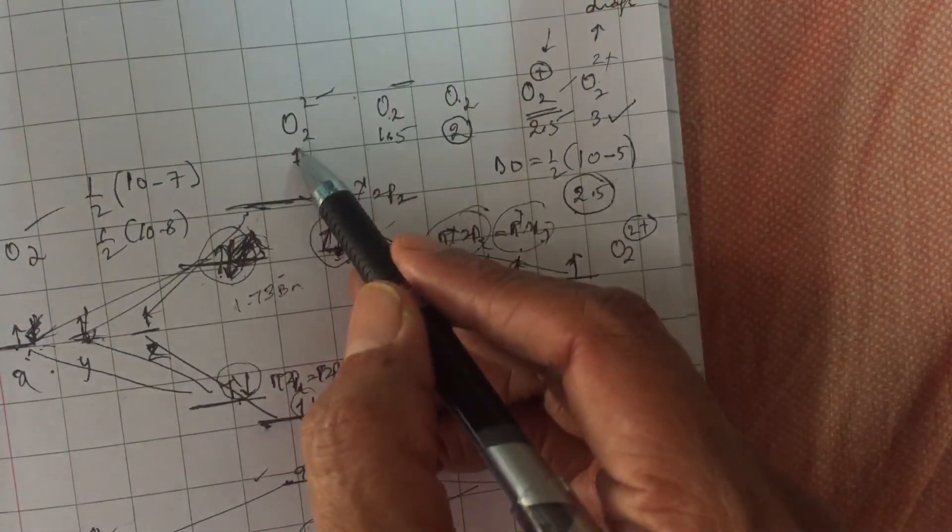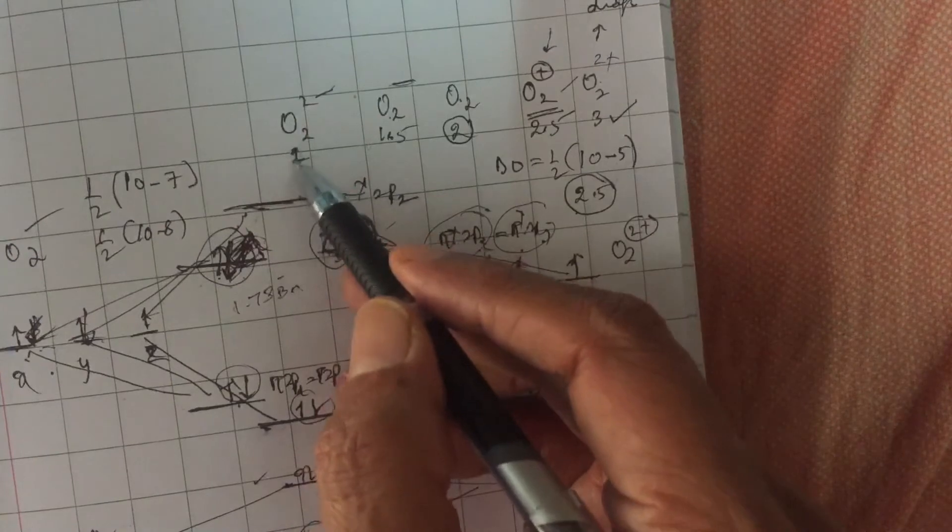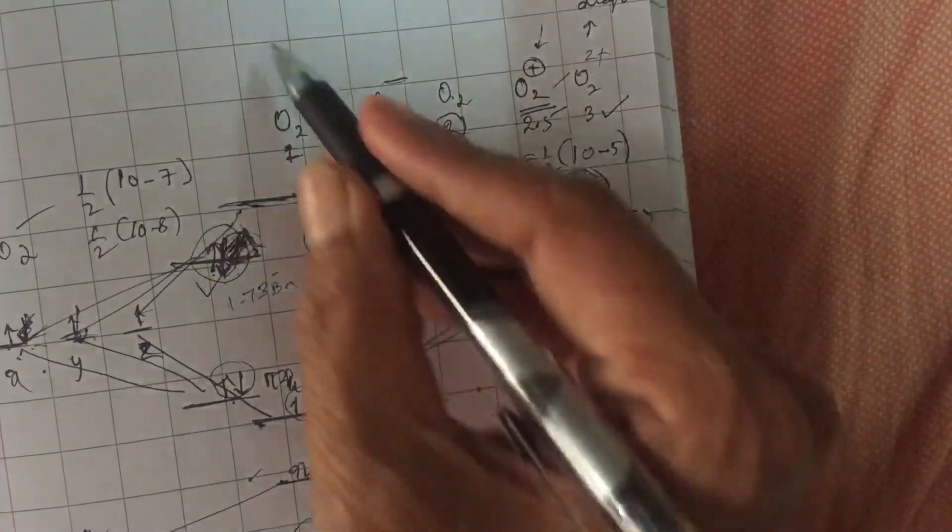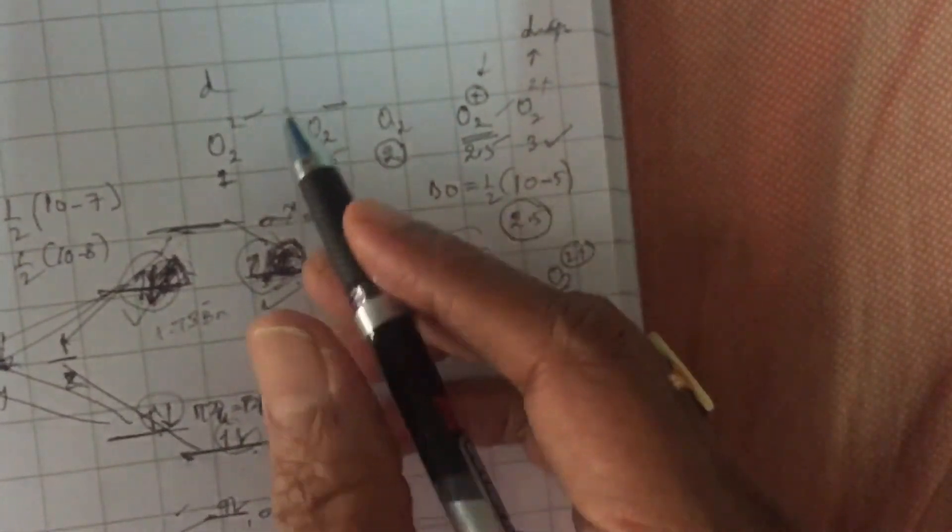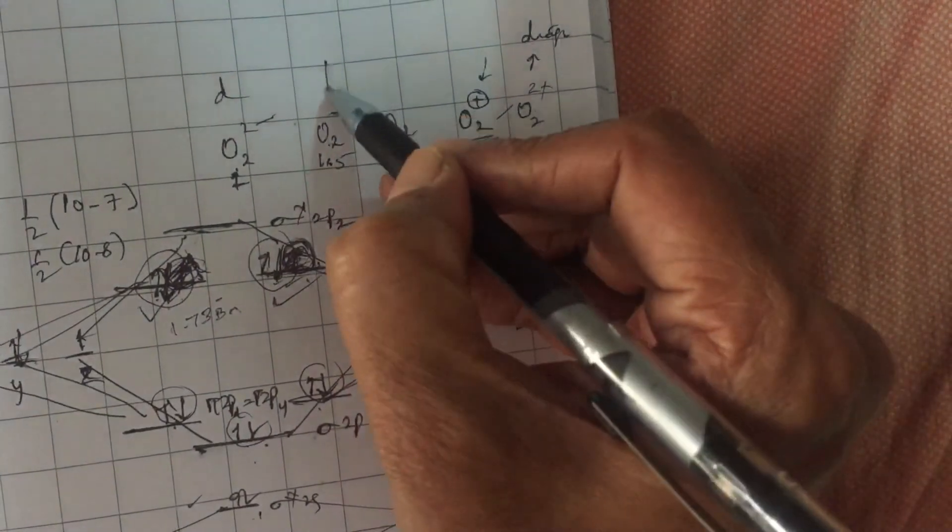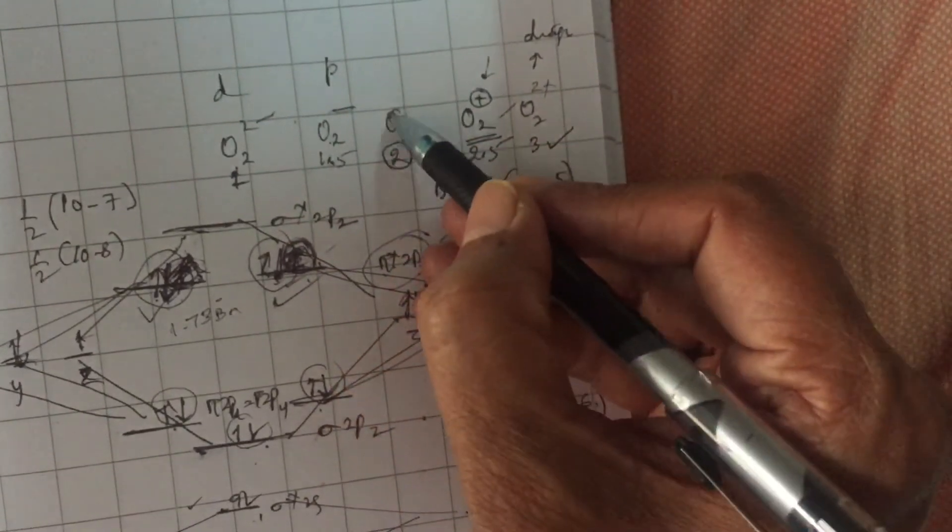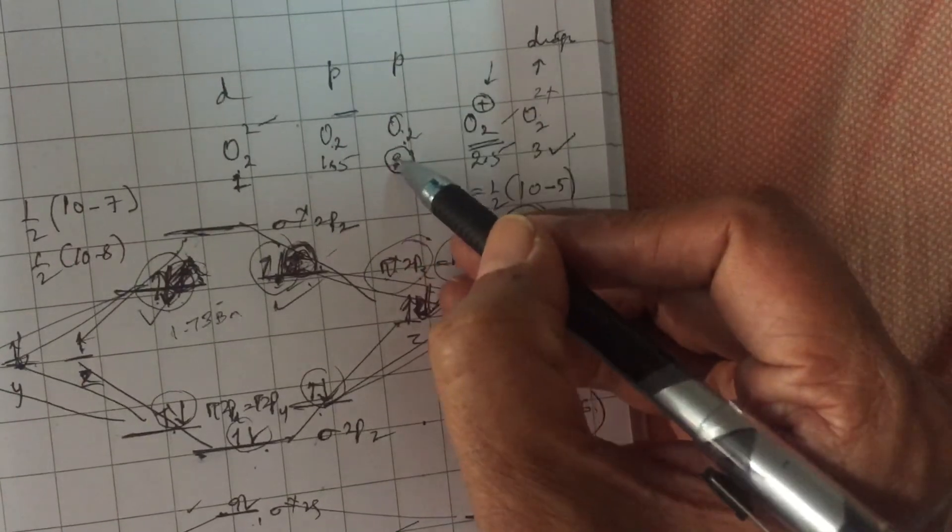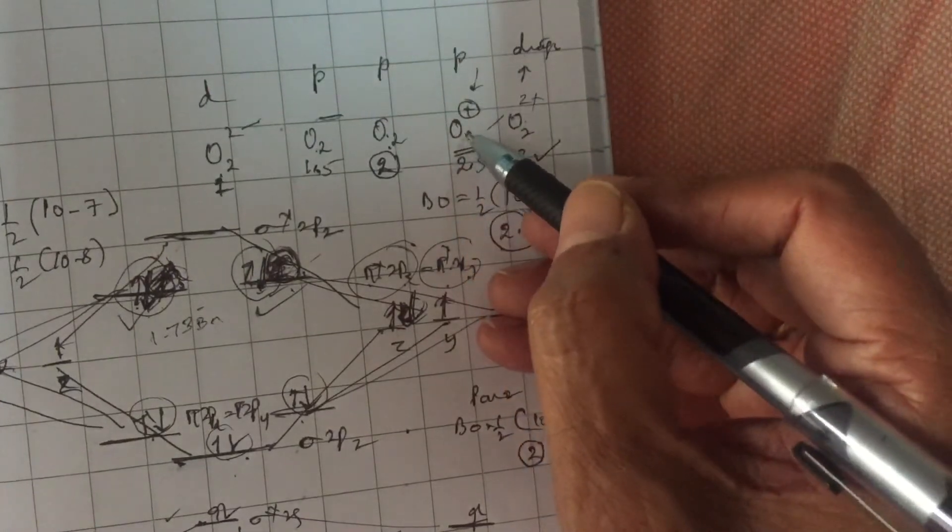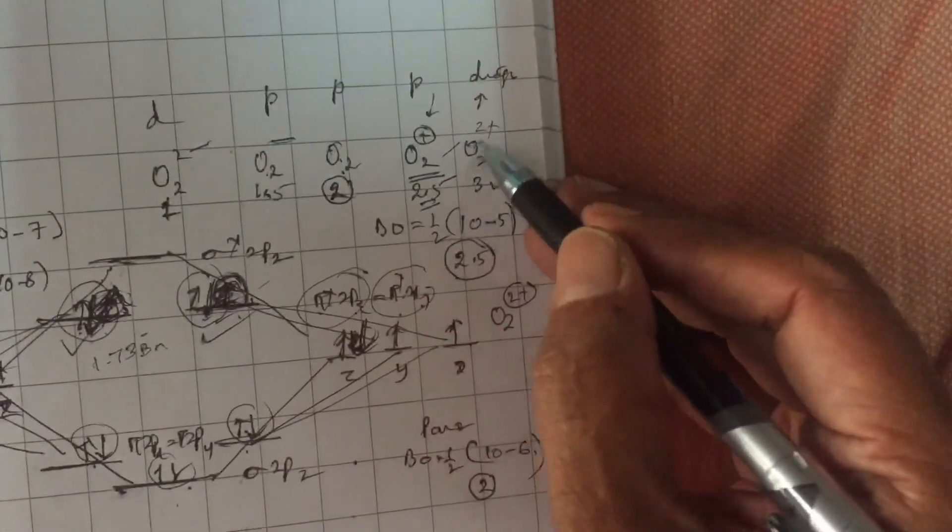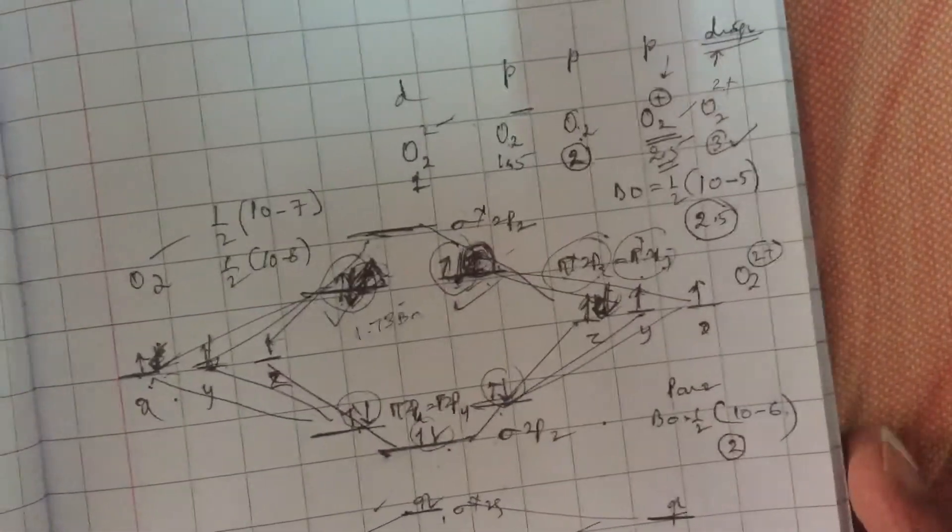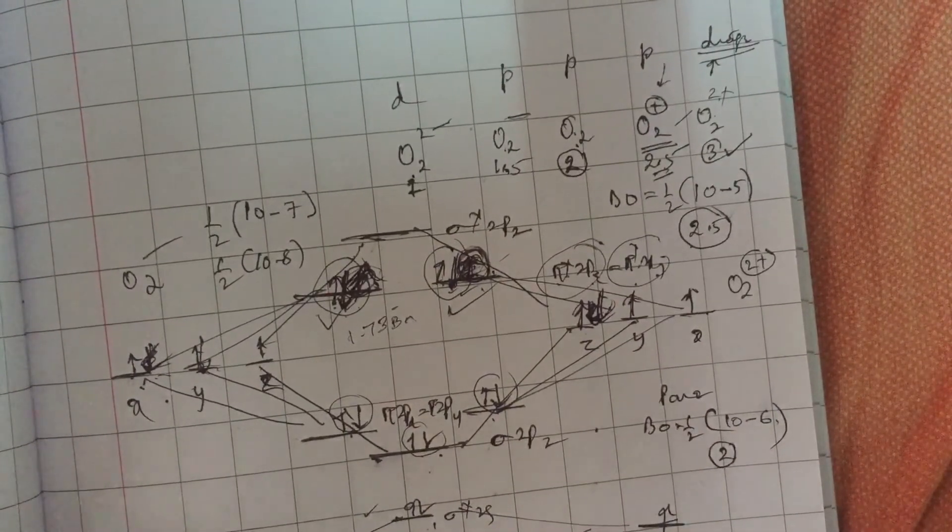It became bond order further short, making it less stable. Also, O2²⁻ has no unpaired electron. This is a pair, this is also a pair. Therefore, it became diamagnetic. So if I am comparing these ions and molecule oxygen, O2²⁻ is diamagnetic. O2⁻ is paramagnetic due to 1 unpaired electron, bond order is 1.5. O2 is paramagnetic due to 2 unpaired electrons, bond order is 2. O2⁺ is paramagnetic due to only 1 unpaired electron, but bond order is 2.5. O2²⁺ is diamagnetic and bond order is 3. This is the story of various types of oxygen molecule and ions.